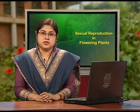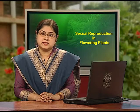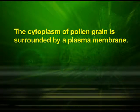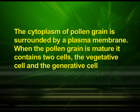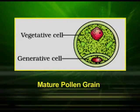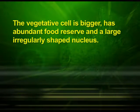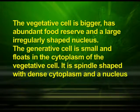The inner wall of the pollen grain is called the intine. It is a thin and continuous layer made up of cellulose and pectin. The cytoplasm of the pollen grain is surrounded by a plasma membrane. When the pollen grain is mature, it contains two cells: the vegetative cell and the generative cell. The vegetative cell is bigger, has abundant food reserves and a large irregularly shaped nucleus. The generative cell is small and floats in the cytoplasm of the vegetative cell. It is spindle shaped with dense cytoplasm and a nucleus.